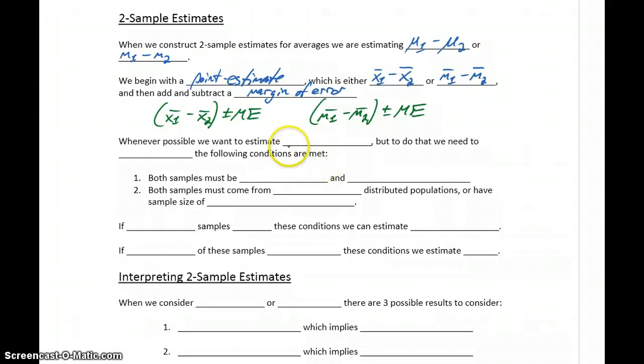Whenever possible, we want to estimate μ1 minus μ2 because our population mean is always the more desirable measure of center, since it takes all of our data into account. But in order to estimate that, we need to verify that some conditions are met.